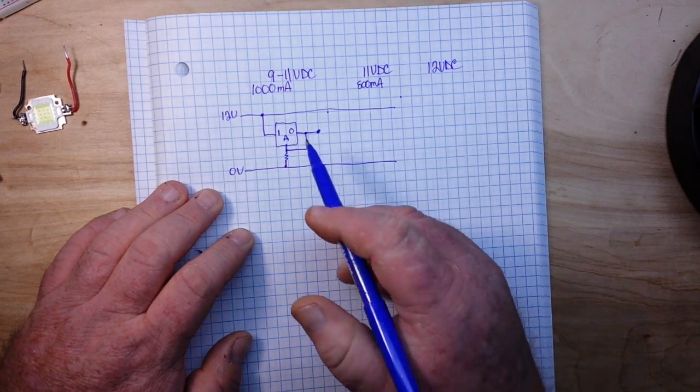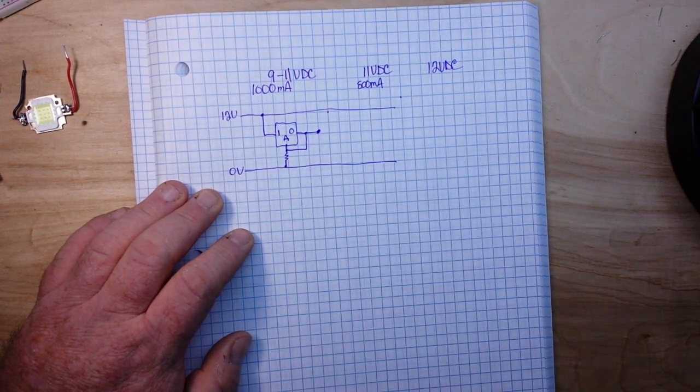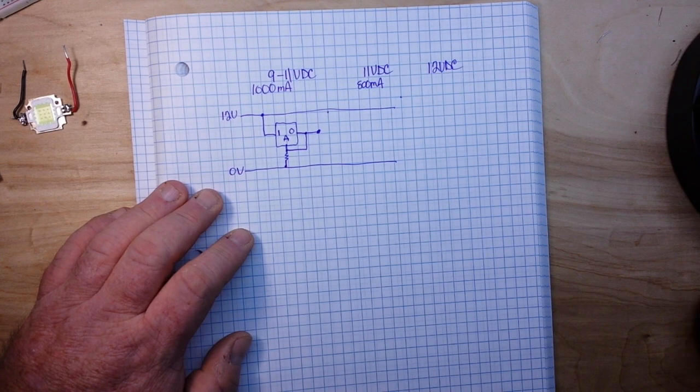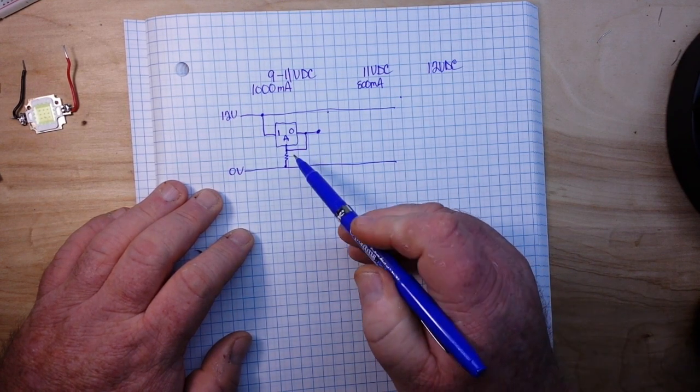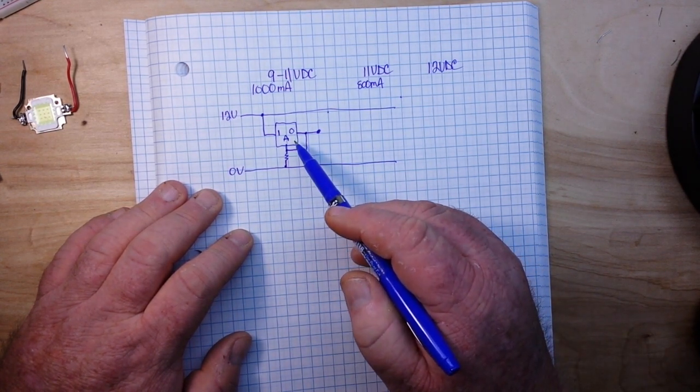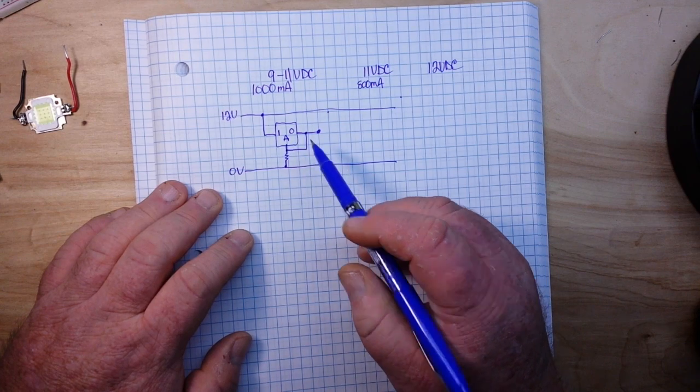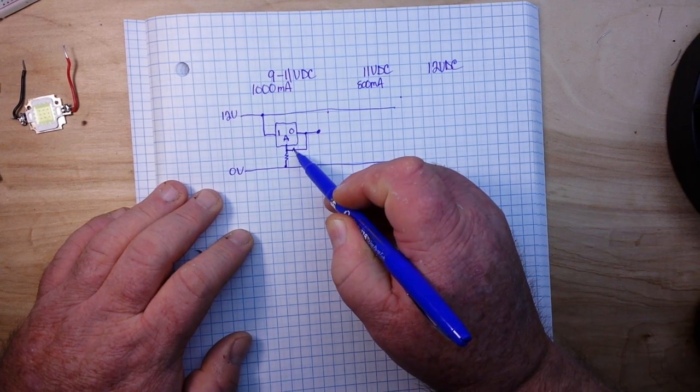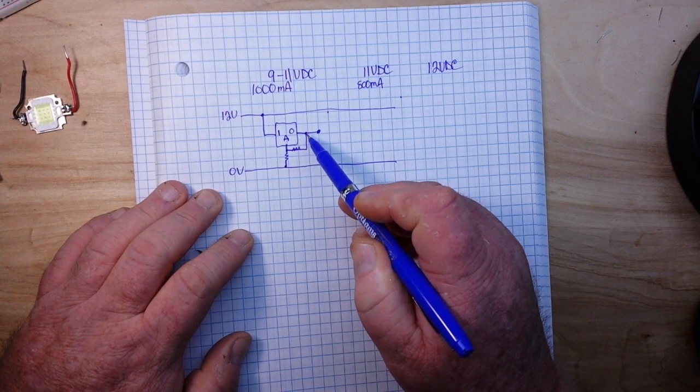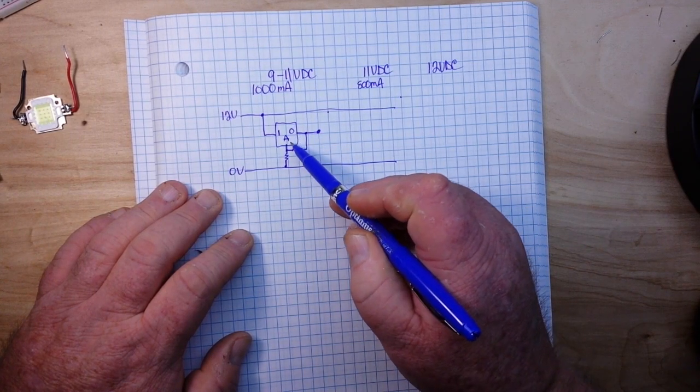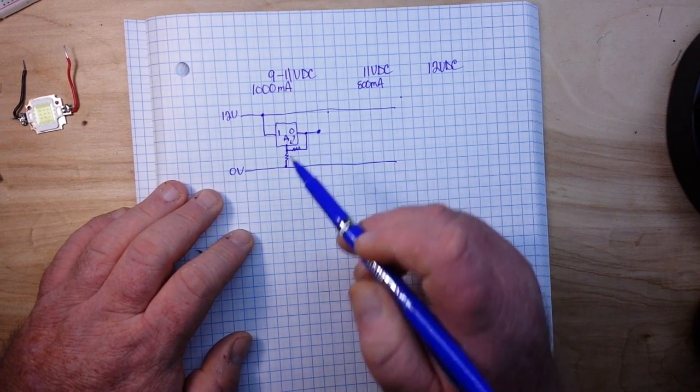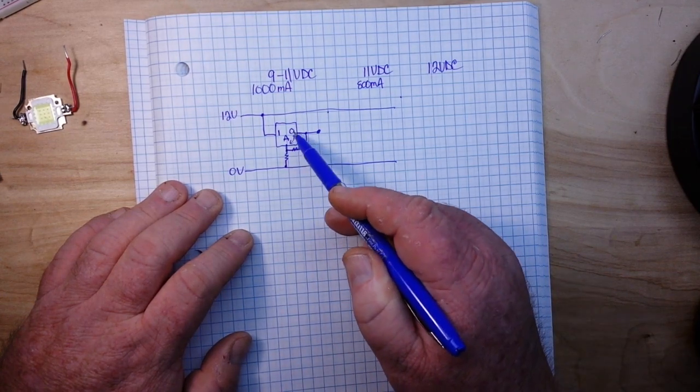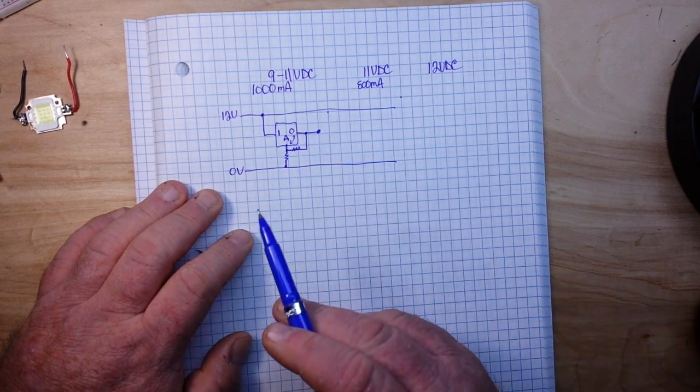And coming up to our output. And the way the LM317 works is it has a 1.25 voltage reference inside, so it will continue to adjust the output until it finds the 1.25 volt difference between adjust and output.